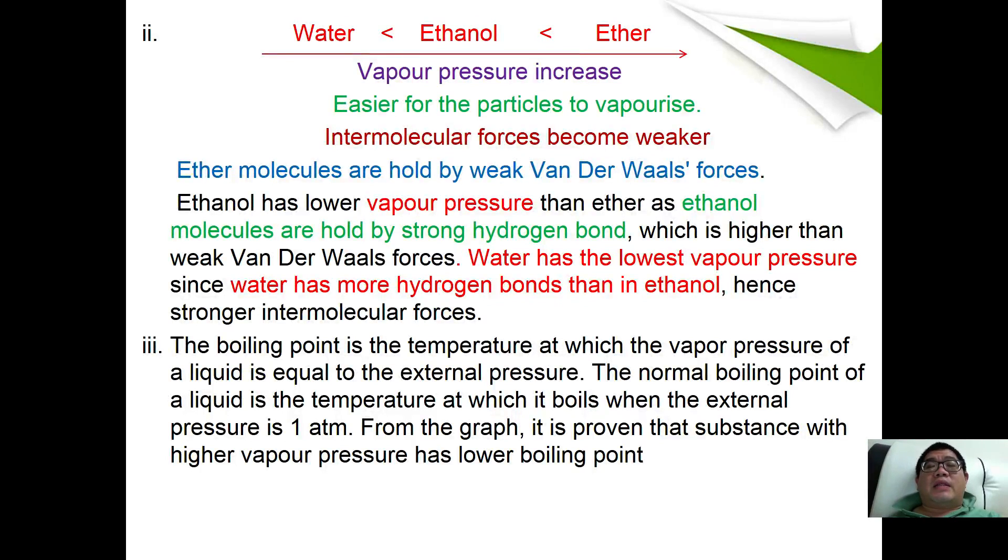When a substance is easily vaporized, it is due to weak intermolecular forces. In this case, ether is held by weak Van der Waals forces. Ethanol has a lower vapor pressure than ether because ethanol is held by strong hydrogen bonds. Whereas water has the lowest vapor pressure since water molecules form more hydrogen bonds compared to ethanol, hence it has the highest intermolecular forces.